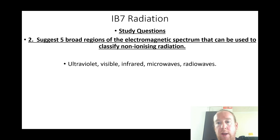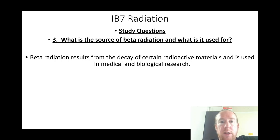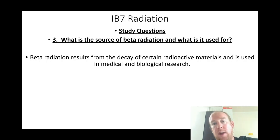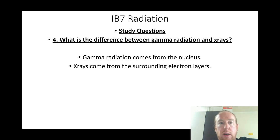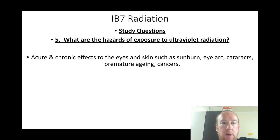What is the source of beta radiation and what is it used for? Beta radiation results from the decay of certain radioactive materials and is used in biological and medical research. What is the difference between gamma radiation and X-rays? Gamma radiation comes from the nucleus; X-rays come from the surrounding electron layers.